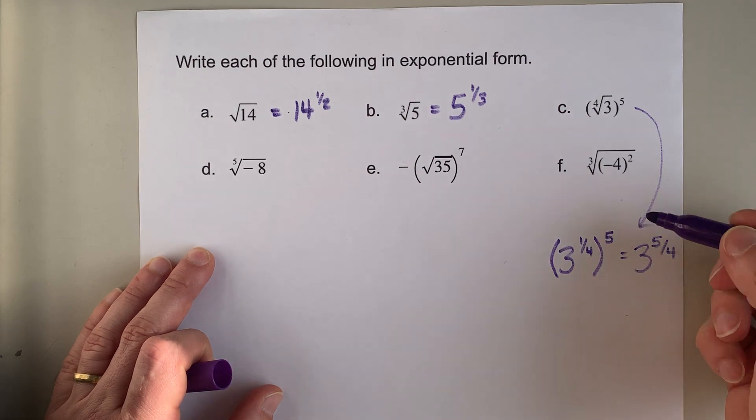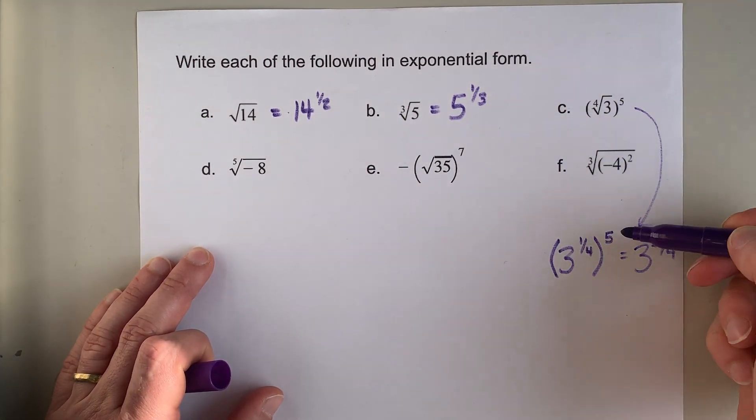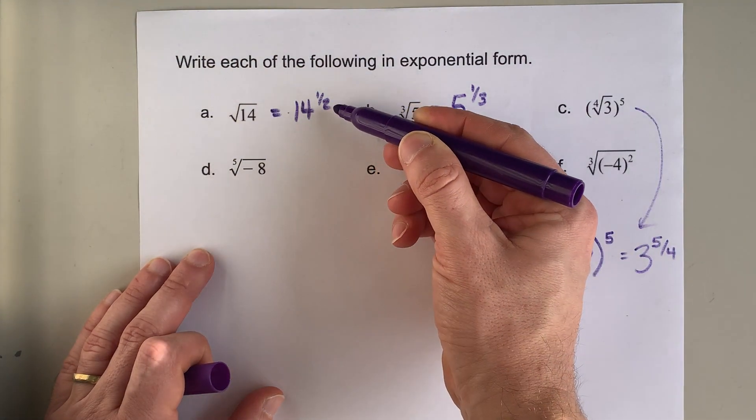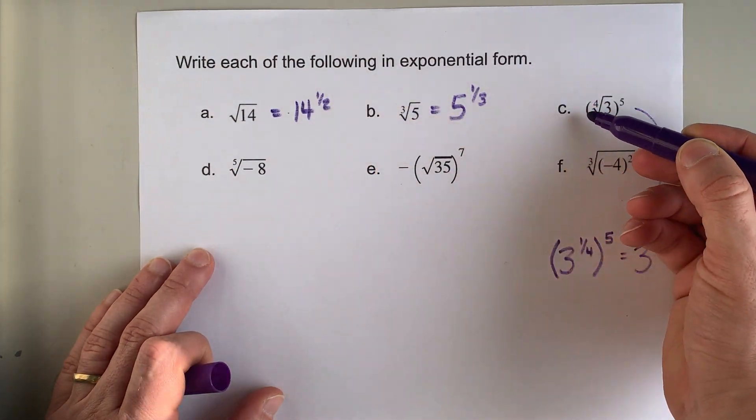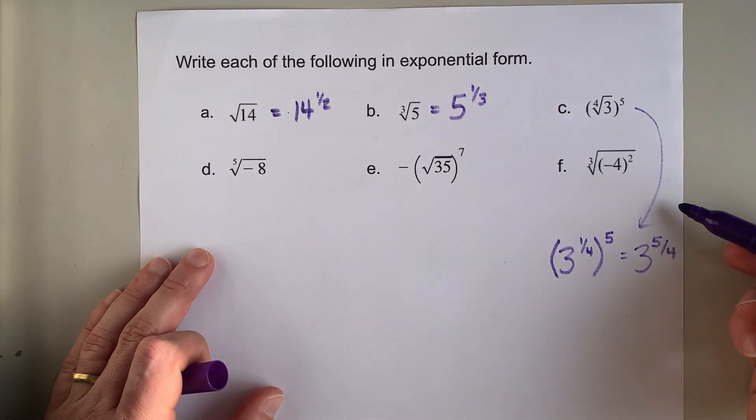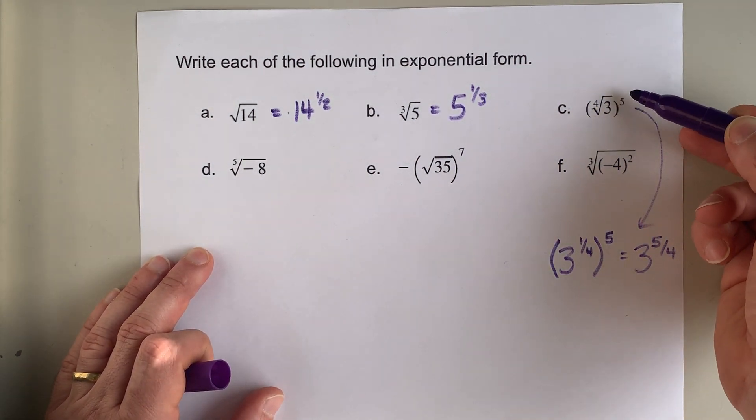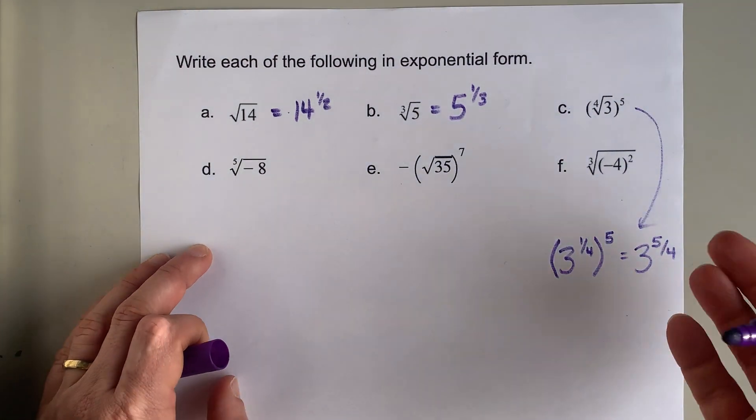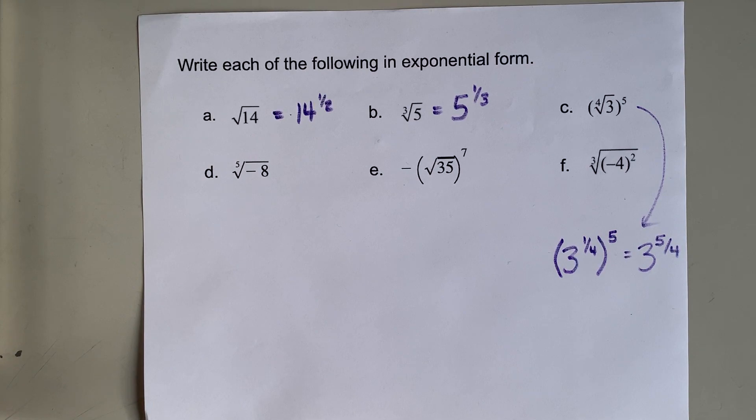Now, you'll notice a little shortcut here. Here, the radical number, and remember square root is two, but otherwise a number will be written over the radical there, goes to the denominator of the exponent, and any whole number exponent goes in the numerator. Not bad. Let's continue this.